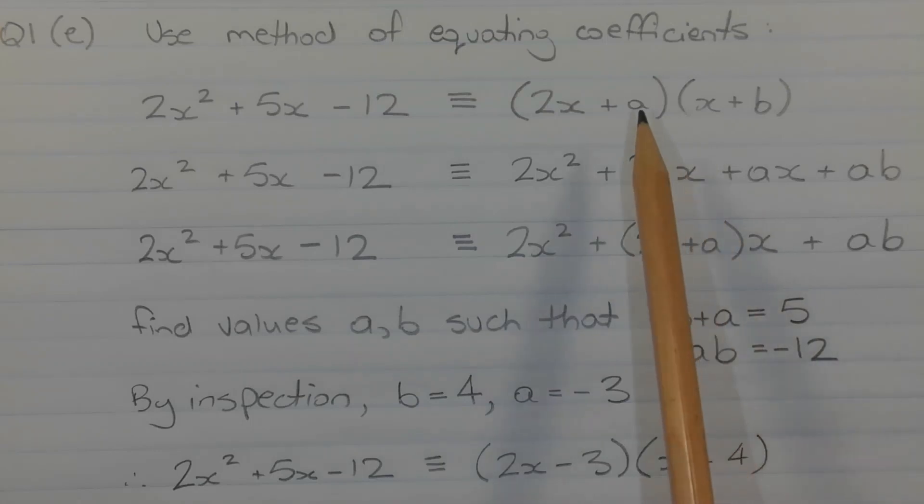So I just need to find the values of a and b. So I'm going to expand the right hand side. We're going to get 2x squared plus 5x minus 12 is identical to 2x squared plus 2bx plus ax plus ab.